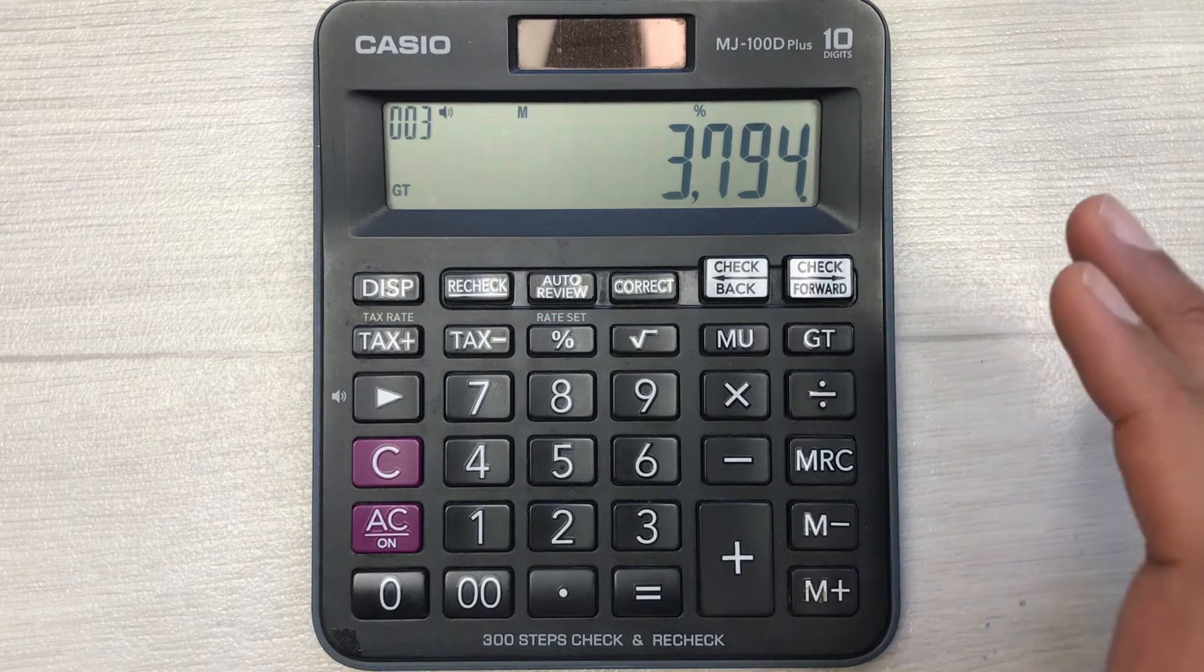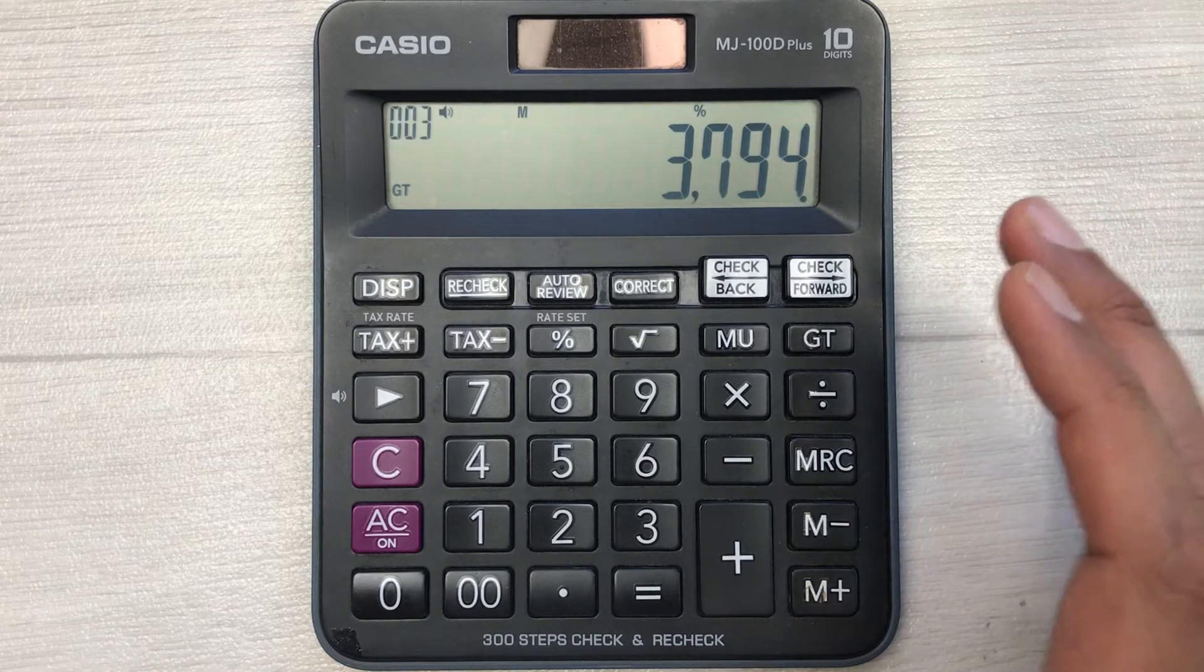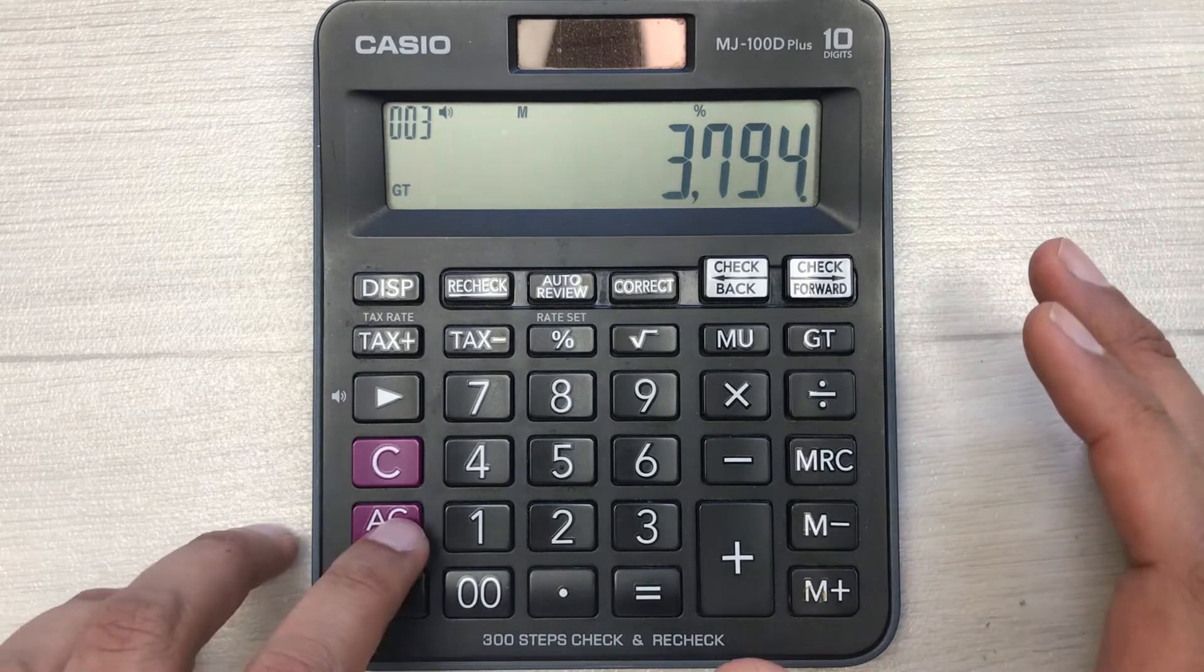So this is the fastest way to find out the 30% discount on calculator. Let's move to another example.